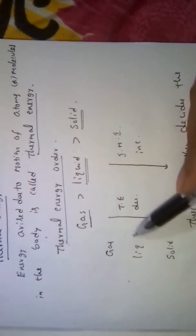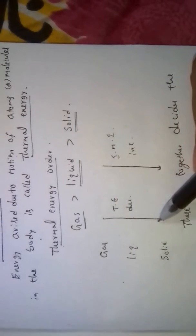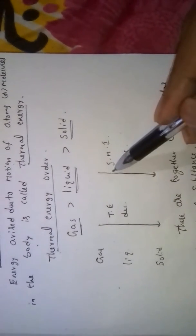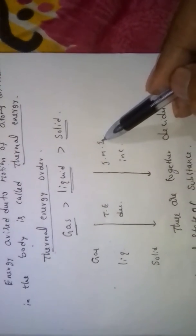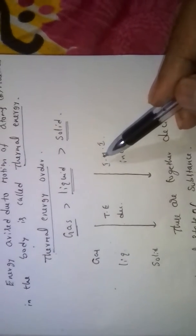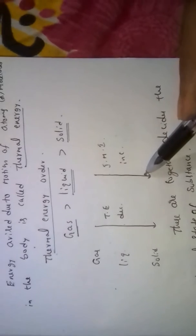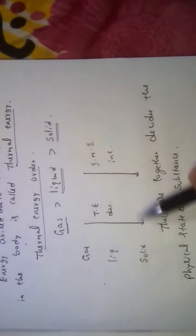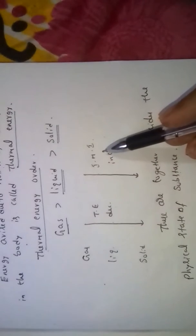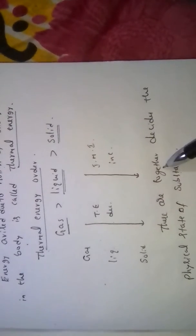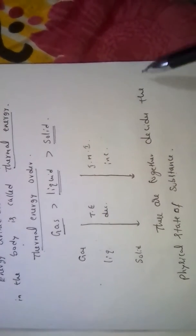In gas, liquid, solid: from gas to liquid, thermal energy decreases; liquid to solid, it decreases further. Whereas intermolecular interactions or attraction forces increase from gas to solid. These two—thermal energy and intermolecular interactions—together decide the physical state of the substance.